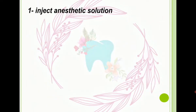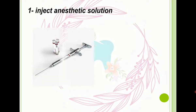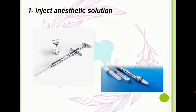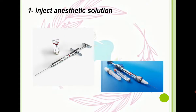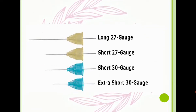Before extraction we have to do anesthesia, so in this case we need to inject anesthetic solution. For this we need one dental syringe and a cartridge which contains anesthetic solution. I already uploaded a video about anesthetic solution on the Dental Art YouTube channel — you can search and find it easily.